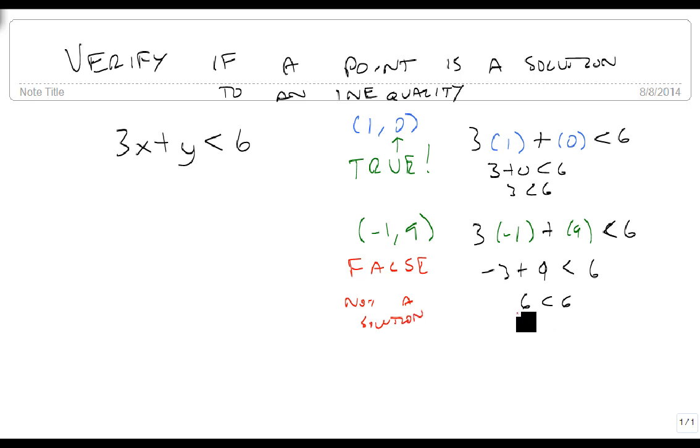In fact, there's something very particular. I got 6 and 6. That means that this point (-1, 9) is actually on the graph, so it's not going to be a solution because it's not an or equals. If it was an or equals, then it would have worked. But this is how we verify if a point is a solution or not.